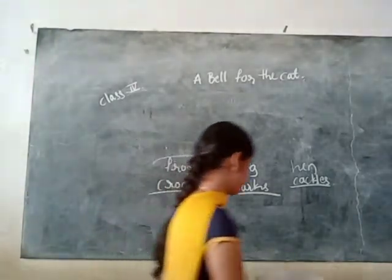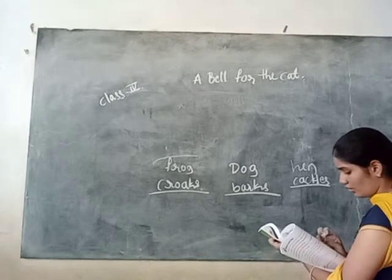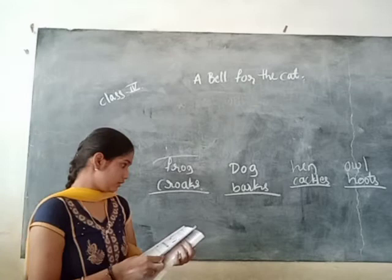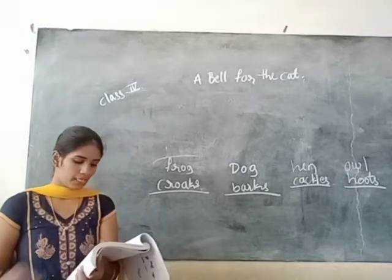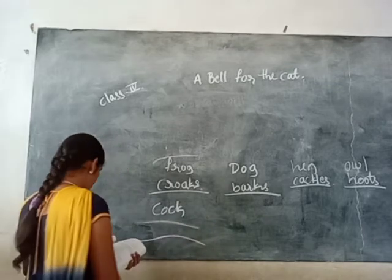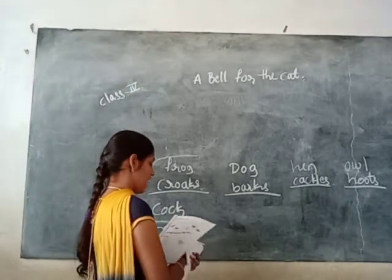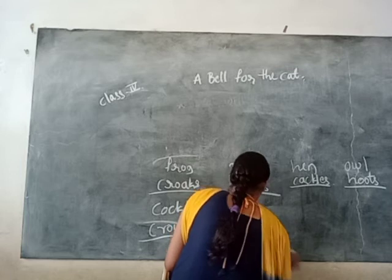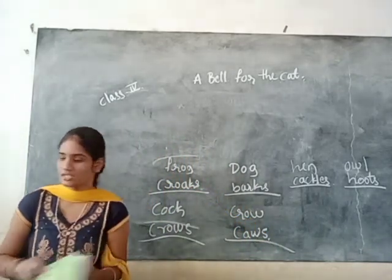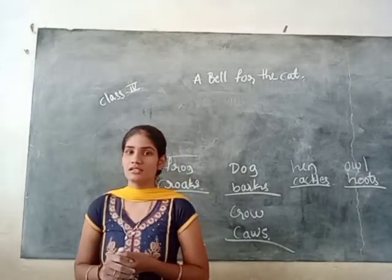The fifth picture is of a fox. The last picture is of a crow. The sound of the crow is caws. Okay students, have you written it? Write it down. Let me stop here — in the next class we will discuss further question answers of the lesson.